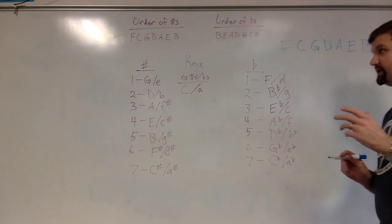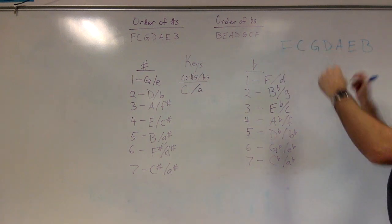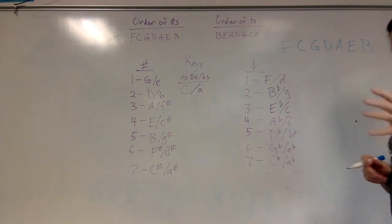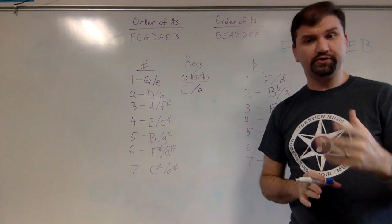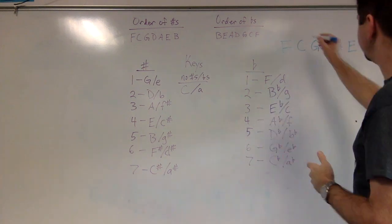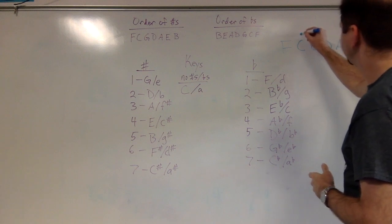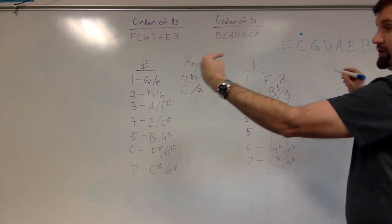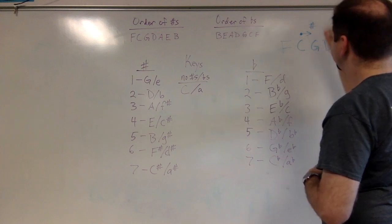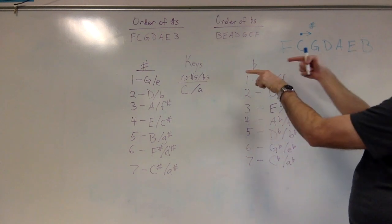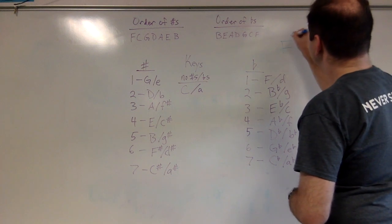Order of sharps here. We know that sharps go this way and flats go this way. What is the key signature for major that has no sharps or no flats? Well, that's the key of C. And as we said, if we go this way, then we get sharps. And if we go this way, then we get flats.